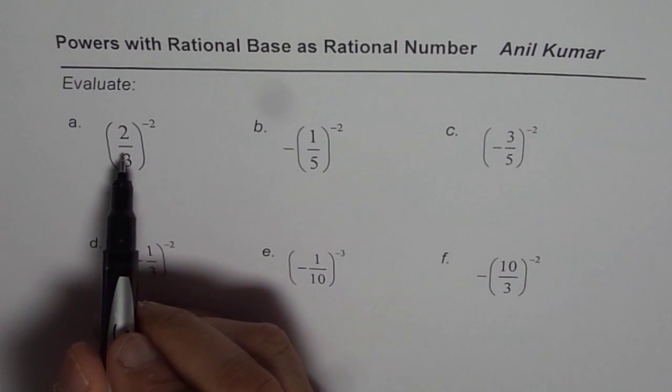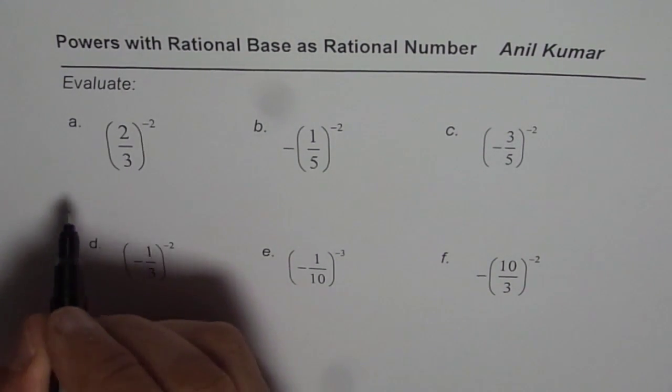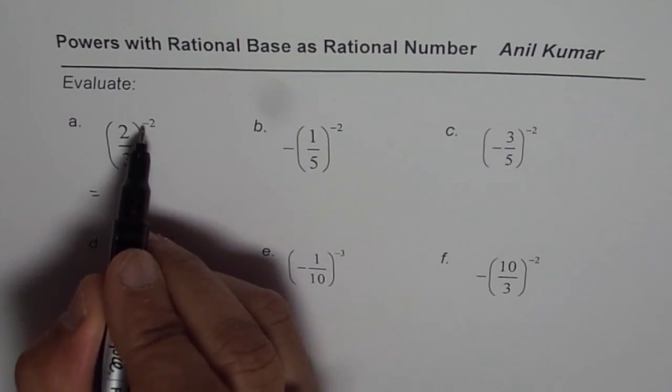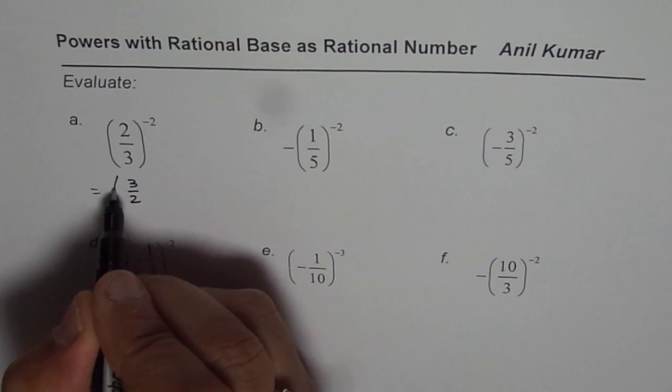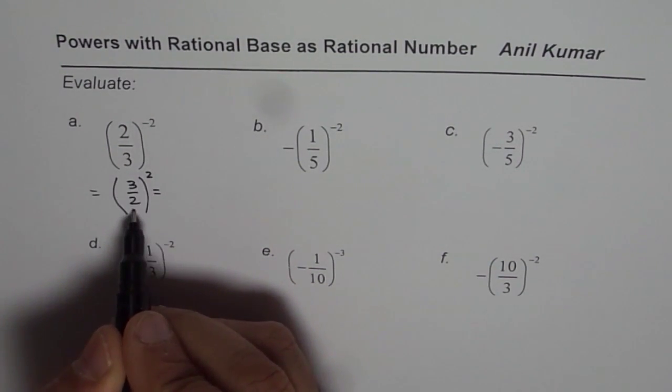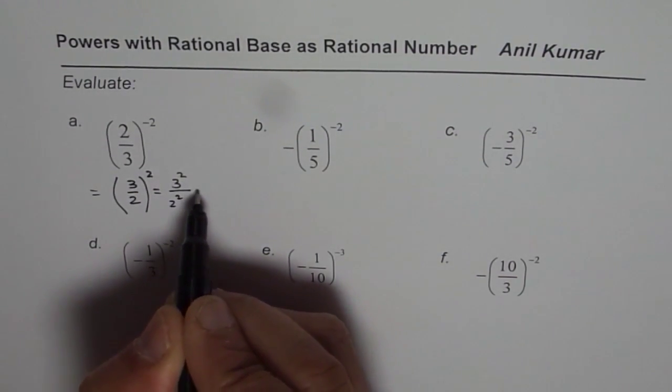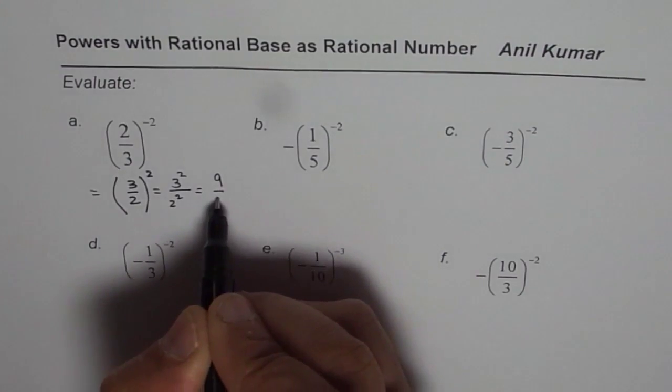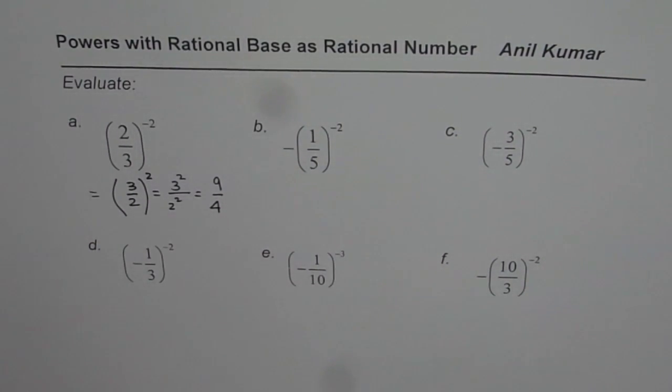So, let us evaluate them one by one. (2/3)^-2 could be written as that minus makes it (3/2), reciprocal. So, we write reciprocal and then the square. That really means the square is applied to both. So, it is 3^2 over 2^2 which is 9/4. So, that is how you could actually evaluate it.